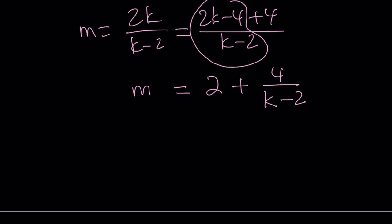m is in terms of k but in a nicer way. Since m and k are both positive integers, then k minus 2 must be a divisor of 4 and you can just proceed with different possibilities.